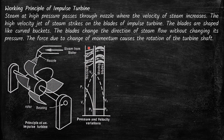On the left side there is a graph. The first column represents the nozzle and the second column represents the moving blades. The expansion of steam happens fully in the nozzle, so during expansion the pressure drops from P1 to P2. In the moving blade the pressure remains constant because there is no expansion of steam taking place.